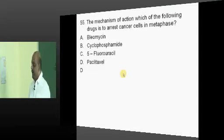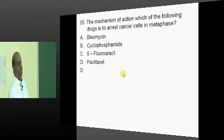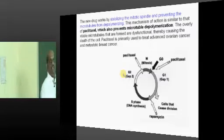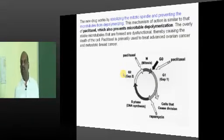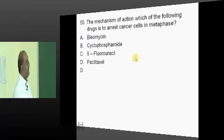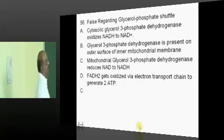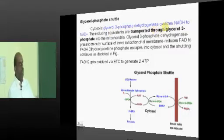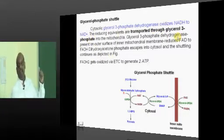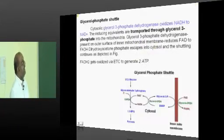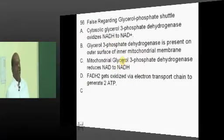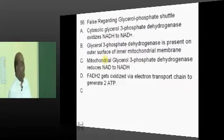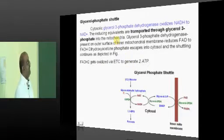Metaphase — paclitaxel: how does it act? Paclitaxel will stabilize the mitotic spindle and prevent the microtubules from depolymerizing, so that it will typically lead to the arrest of cancer cells in their metaphase. Coming to the glycerol phosphate shuttle: the cytosolic glycerol-3-phosphate oxidizes the NADH, and the reducing equivalents are transported through glycerol-3-phosphate into the mitochondria. It is the cytosolic glycerol-3-phosphate dehydrogenase, not the mitochondrial one, which typically acts.